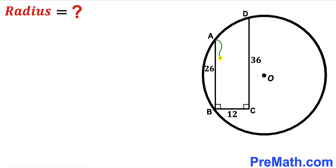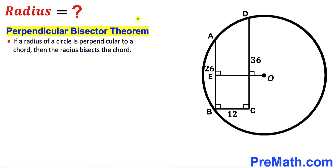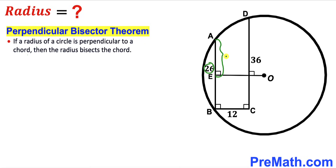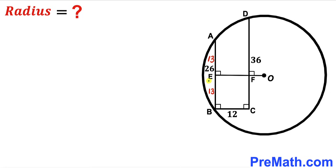We know chord AB has length 26. I have dropped perpendicular EO onto chord AB. Recalling the perpendicular bisector theorem: if a radius of a circle is perpendicular to a chord, then the radius bisects the chord. So EO bisects AB into two equal parts, meaning segment AE equals 13 and segment EB equals 13 units.